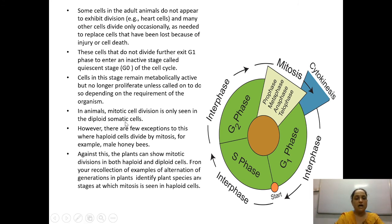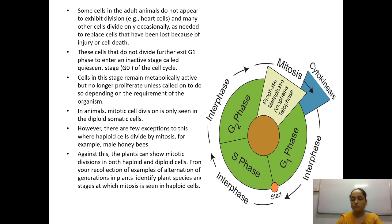In animals, mitotic cell division is only seen in diploid somatic cells. However, there are a few exceptions — for example, the male honeybee is haploid but still undergoes mitosis. Basically, mitotic division is followed in diploid cells.